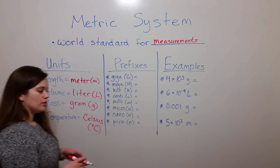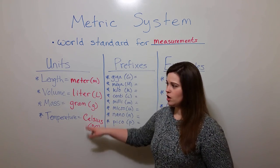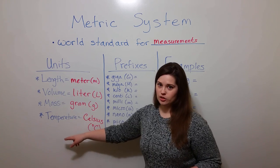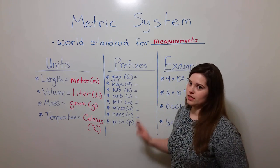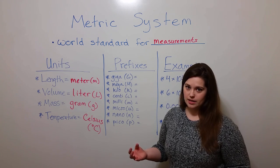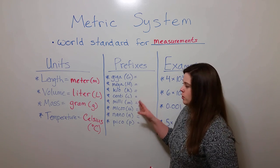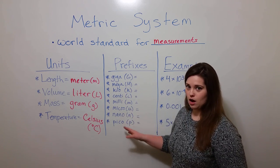Now, the interesting thing with the metric system is that these base units are used for these different kinds of measurements, and prefixes are employed in order to get the right size of units. There are various different prefixes. Only a few of them are shown here, but these are the most common ones.